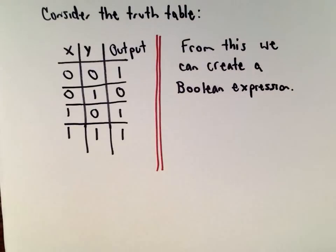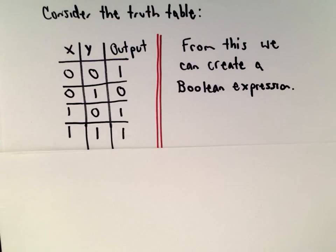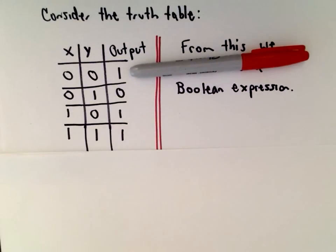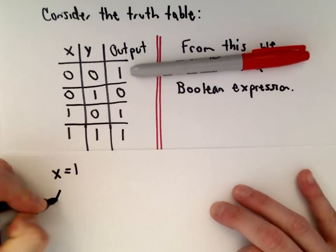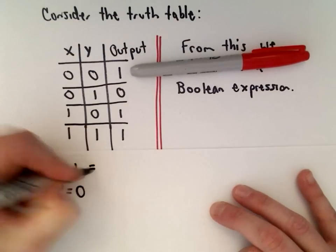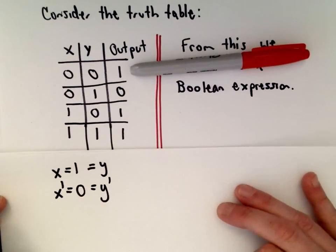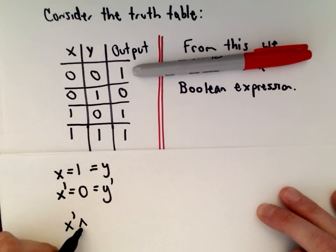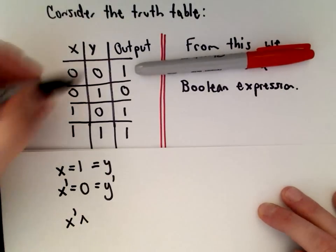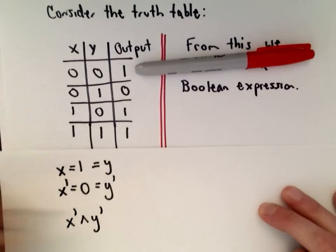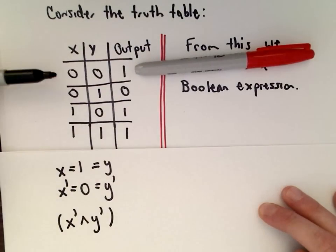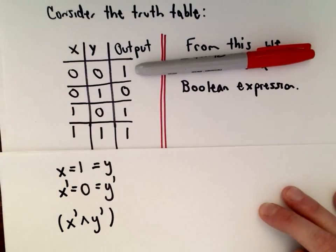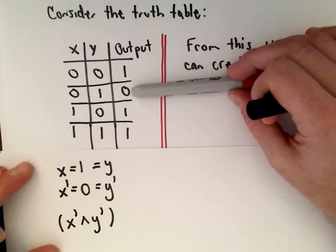From this we can create a boolean expression. The way we do it is to find everywhere where there's an output of 1. For the first row, where both x and y are equal to 0: since x has a value of 0, we write that as not-x (x prime). We combine it with an AND symbol, and since y is also 0, we write not-y (y prime). This boolean expression represents that first row, giving an output of 1. We skip the second row because it has an output of 0.